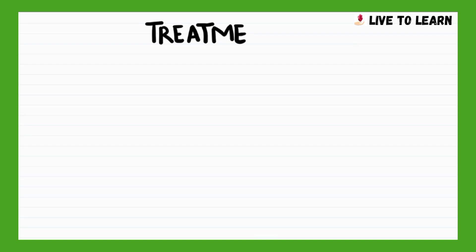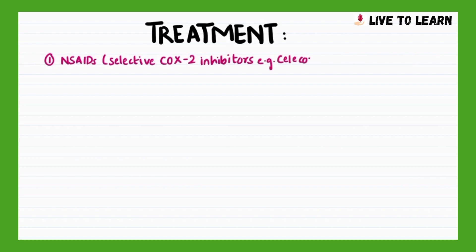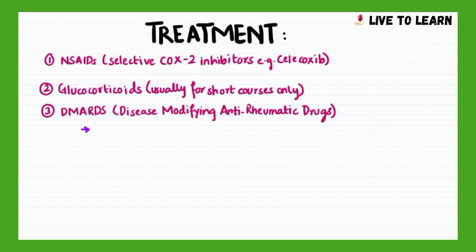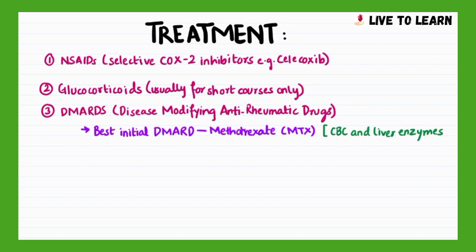For treating rheumatoid arthritis, non-steroidal anti-inflammatory drugs, especially COX-2 inhibitors such as celecoxib, are used for pain relief. Glucocorticoids are usually prescribed for short courses only. Disease-modifying anti-rheumatic drugs, or DMARDs, are prescribed to such patients, and the best initial DMARD is methotrexate. CBC and liver enzymes should be assessed every 4 to 8 weeks to screen for methotrexate toxicity.